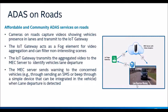Taking lane departure as an example: cameras on roads continuously capture video, and the feeds are sent to the IoT gateway. The IoT gateway itself can run analytics to detect lane departure, or it can send the video feed to the MEC server for detection. If lane departure is detected, the driver receives a warning on their mobile phone, or via a small cellular dongle in the car — which costs far less than a built-in ADAS system.